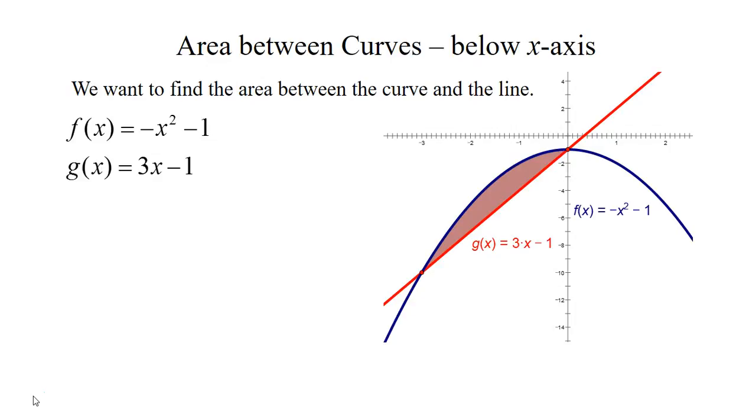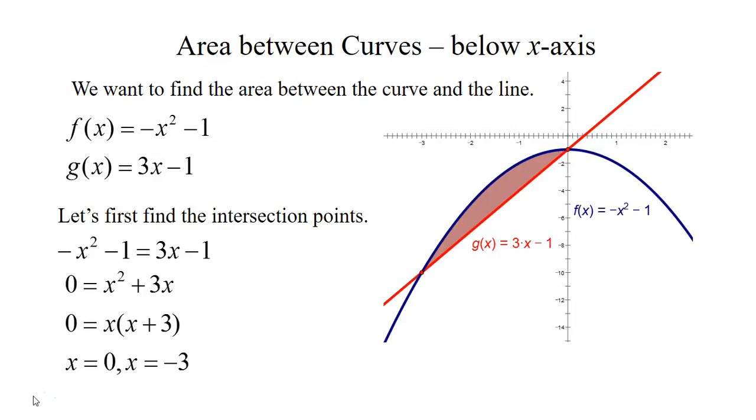First of all, in order to solve this we need to find out where their intersection points are. So we're going to do that by setting the two equations equal to each other. So we have negative x squared minus 1 equaling 3x minus 1 and I'm just going to set it equal to 0 and factor and solve for x. So I got x is 0 and negative 3. So I plug negative 3 and 0 back into the equations and I've got two ordered pairs at 0, negative 1 and negative 3, negative 10.